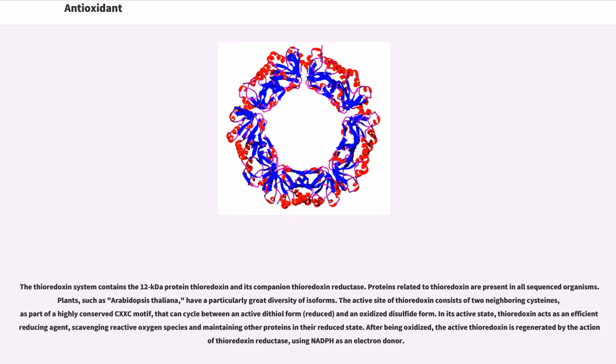The thioredoxin system contains the 12-kilodalton protein thioredoxin and its companion thioredoxin reductase. Proteins related to thioredoxin are present in all sequenced organisms. Plants, such as Arabidopsis thaliana, have a particularly great diversity of isoforms. The active site of thioredoxin consists of two neighboring cysteines, as part of a highly conserved CXXC motif, that can cycle between an active dithiol form (reduced) and an oxidized disulfide form. In its active state, thioredoxin acts as an efficient reducing agent, scavenging reactive oxygen species and maintaining other proteins in their reduced state. After being oxidized, the active thioredoxin is regenerated by the action of thioredoxin reductase, using NADPH as an electron donor.